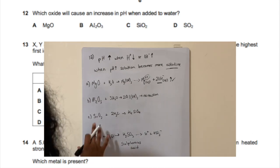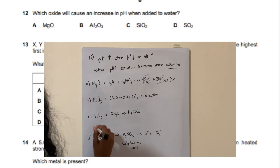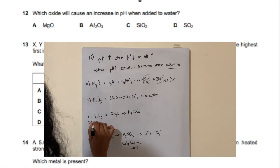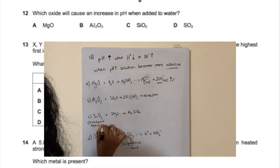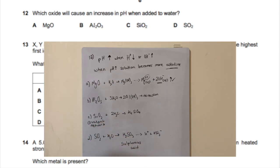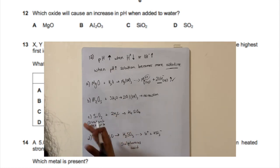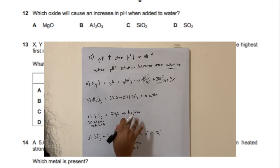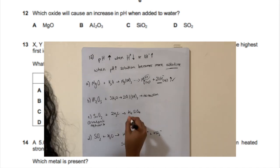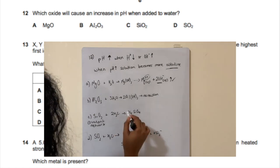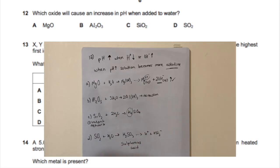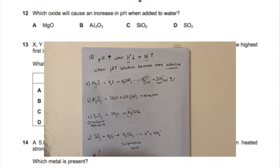Option C is silica, which forms a covalent network with very strong bonds. When reacted with water, the product doesn't dissolve well, and it produces hydrogen — meaning we'd be increasing H⁺ rather than OH⁻, which is the opposite of what we want.